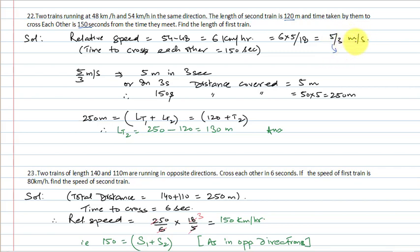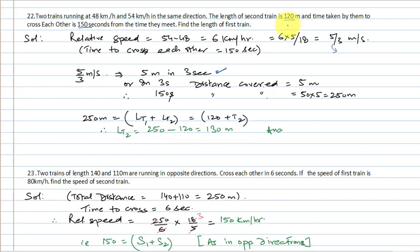Relative speed is 5/3 m/s, meaning 5 meters in 3 seconds. In 150 seconds, distance covered = 5 × 50 = 250 meters. This 250 meters equals the combined length of both trains. So length of train 1 + length of train 2 = 250. Train 2 length is 120, so length of train 1 = 250 − 120 = 130 meters.